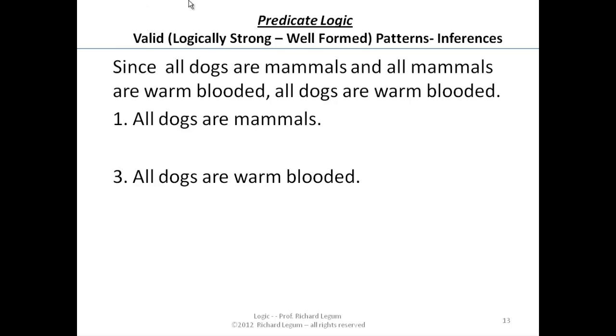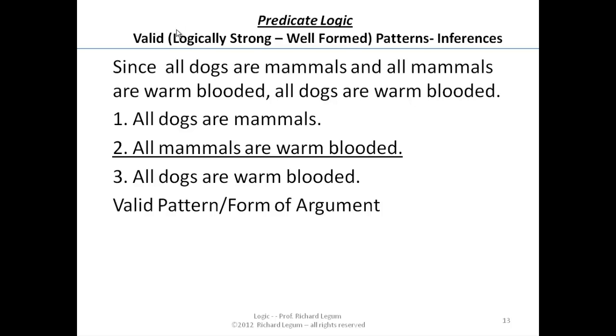The other premise is another generalization that is that all mammals are warm-blooded. Now let's take a look at what is the pattern of this, or the logical form of this inference.